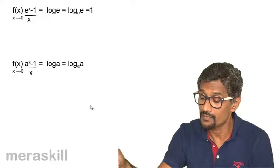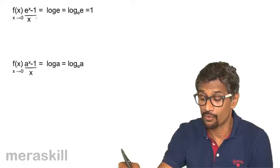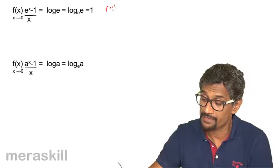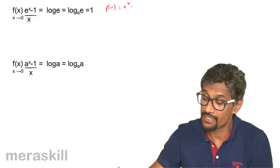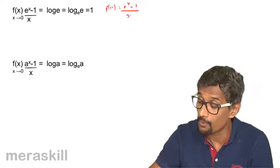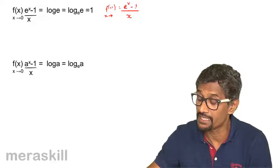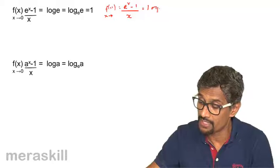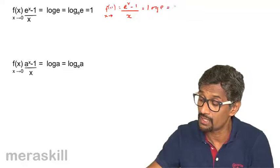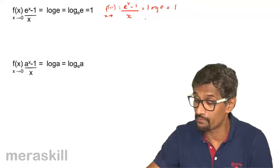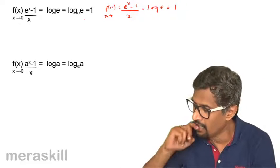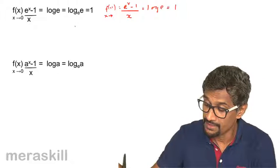We are going to take up a few questions based on this formula. If f(x) = (e^x - 1) / x, then the limit of this as x tends to 0 — the limit of (e^x - 1) / x is nothing but log e to the base e, which is 1.